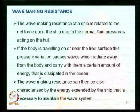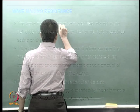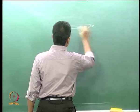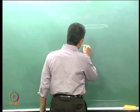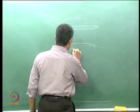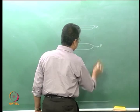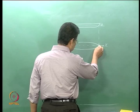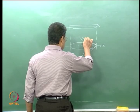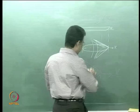When you consider still water and a ship moving through it, taking the plan view — the waterline — the ship moving with velocity V generates waves. There is a divergent wave system and also a transverse wave system. These two wave systems are considered, and these waves possess energy.